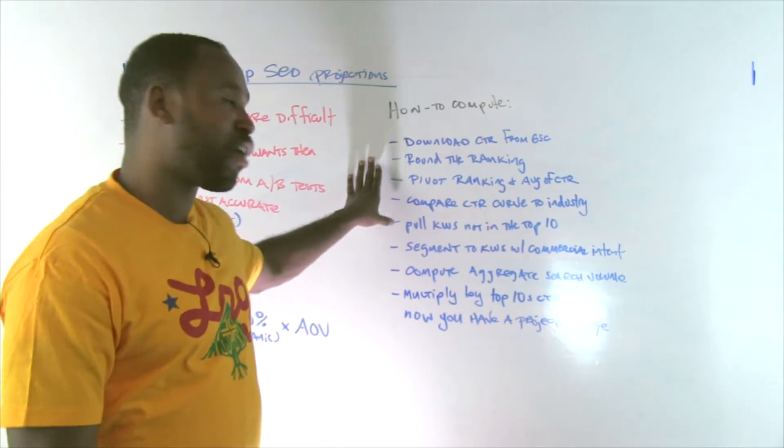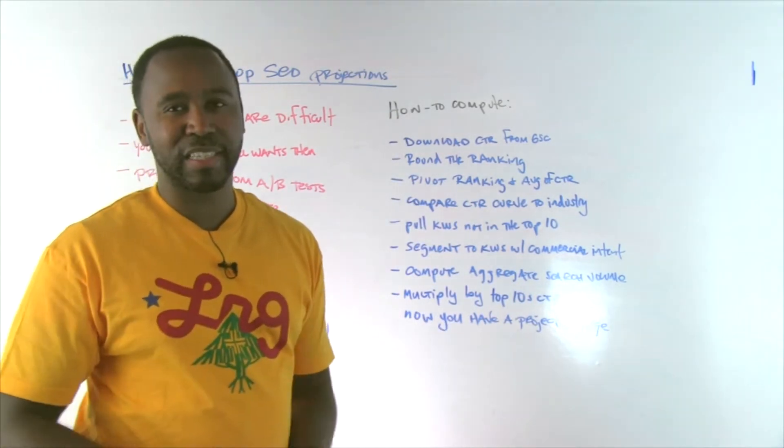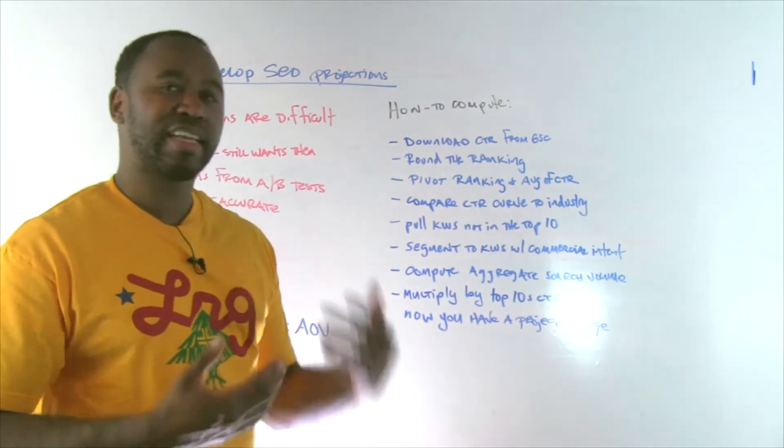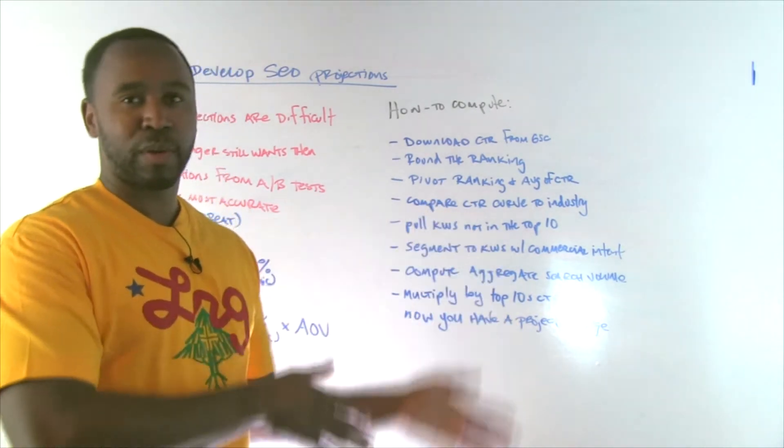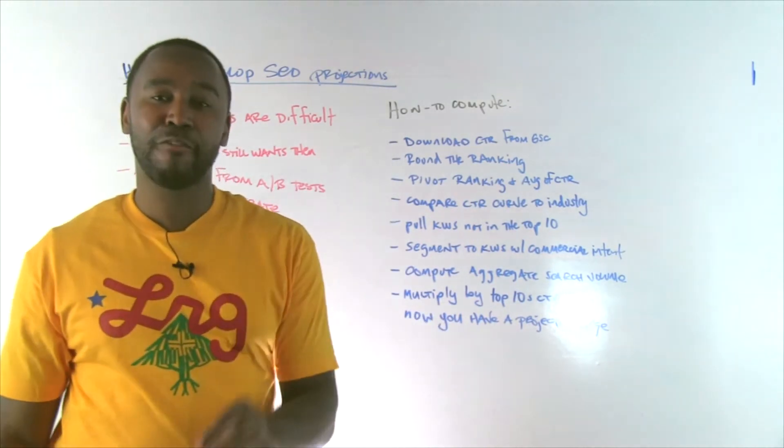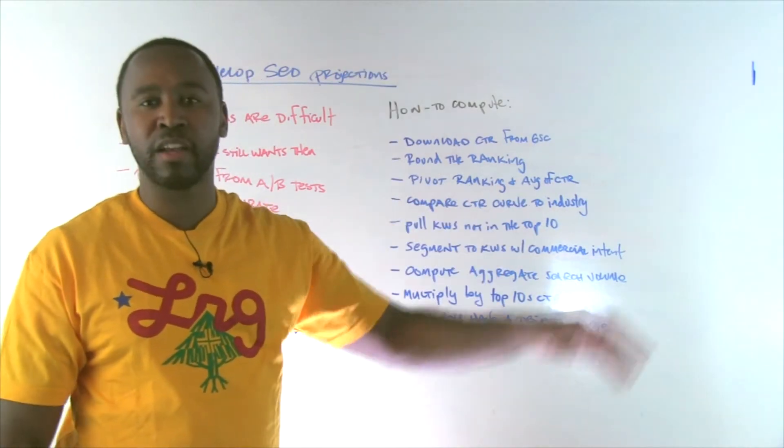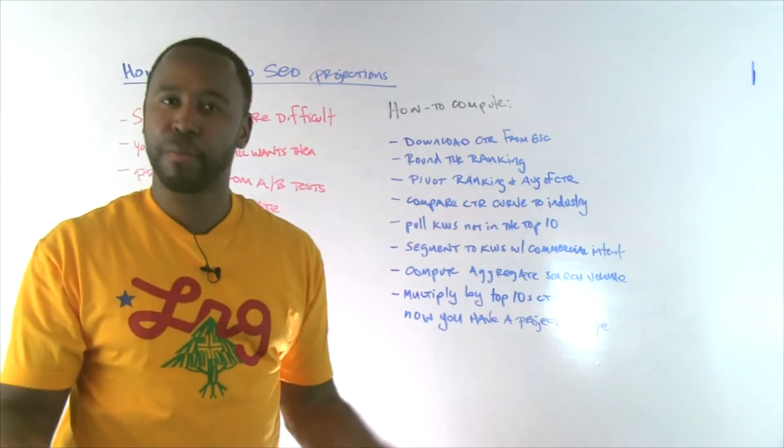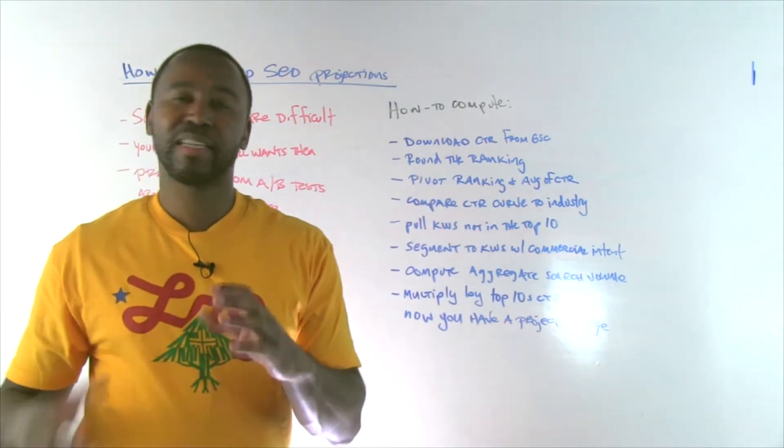And then once you've got that in Excel, you want to round the rankings because the rankings that come out of GSC are going to be decimal points. That's not really valuable in this context. So what we're going to do is basically round it to whatever the number is. Then do a pivot on those rankings versus the average of the CTR. So now what you're going to get is for position one, you're getting an average of let's say 40%, right? And then so on for the remainder. And you want to limit that to the top 10.